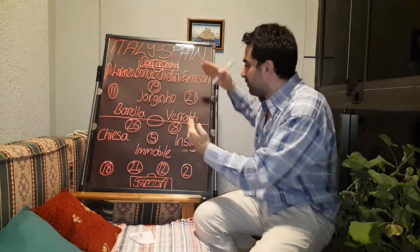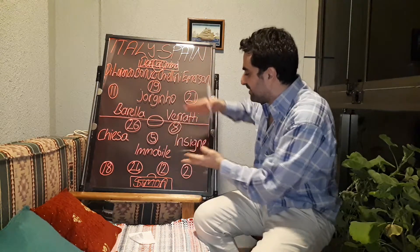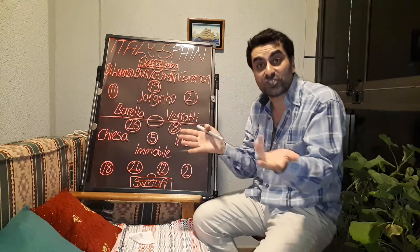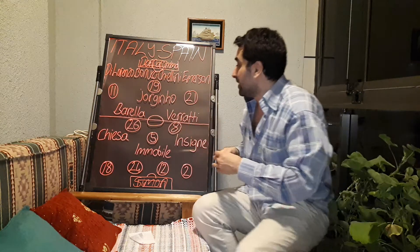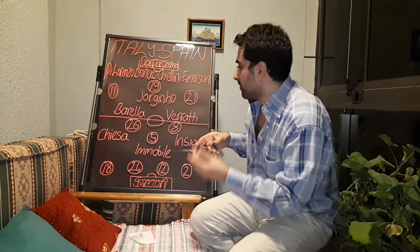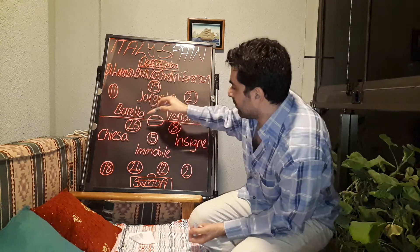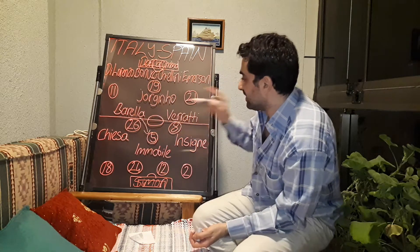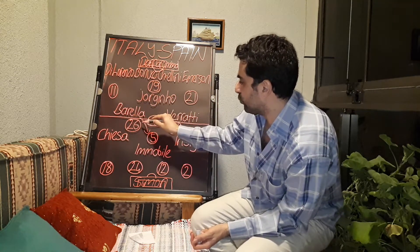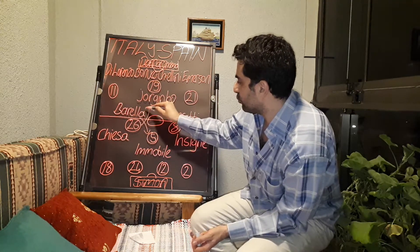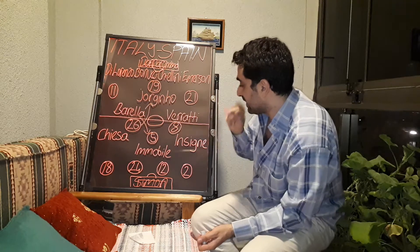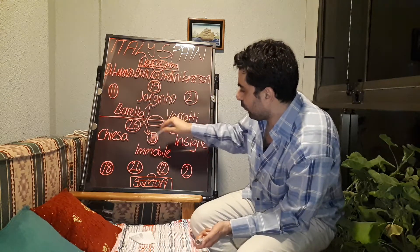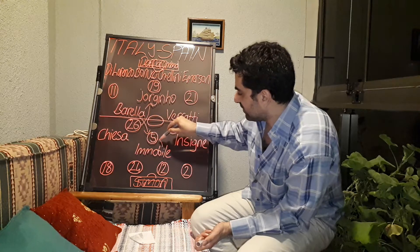Italy played in Mancini's classical 4-3-3 formation and Spain played in Luis Enrique's 4-3-3. On the midfield, every time Barella and Verratti made a higher press on Sergio Busquets. And at the same time, Pedri made a higher press on Jorginho. Sometimes Immobile covered Sergio Busquets with his shadow.